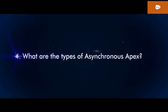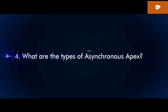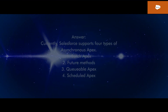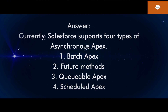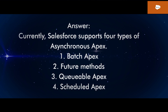Q4: What are the types of asynchronous Apex? Currently, Salesforce supports four types of asynchronous Apex: 1. Batch Apex. 2. Future methods. 3. Queueable Apex. 4. Scheduled Apex.